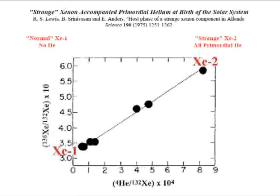This video explains a mystery that has plagued science since 1975. Why, at the birth of the solar system, was there no helium with normal xenon? Why was all the helium with strange xenon, in which the heaviest isotope has twice the normal abundance?